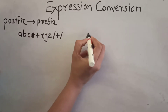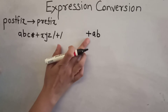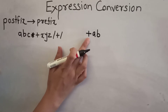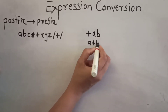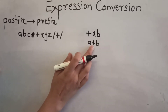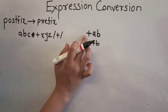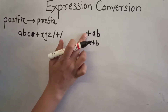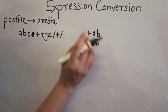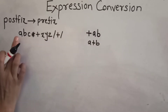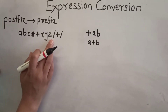In prefix format, the operator should be at the first position and then the operands follow. In infix, we write something like A + B, meaning the operator is in between the operands. But in prefix format, the operator comes first and then the operands. By considering this format, we have to convert the postfix expression to prefix format.